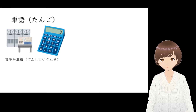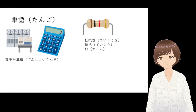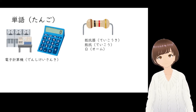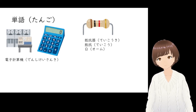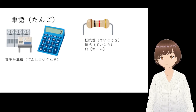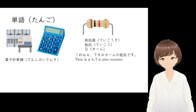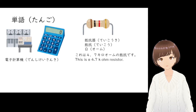Let's get to the part names. The term for resistor in Japanese is teikouki, although it's common to simply say teikou. The unit for measuring resistance is pronounced as ohm. For example, you can say: kore wa 4.7 kOhm no teikou desu — 'This is a 4.7 kOhm resistor.'